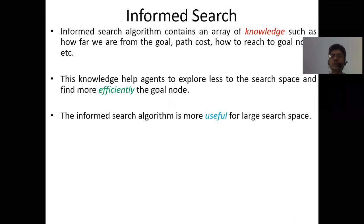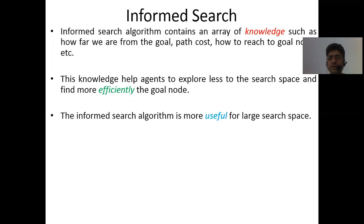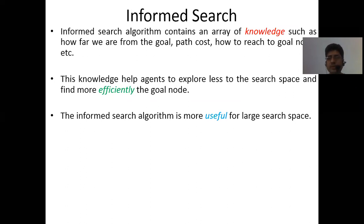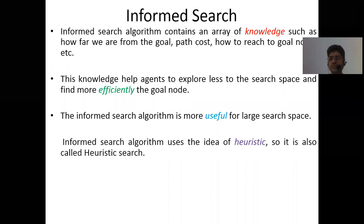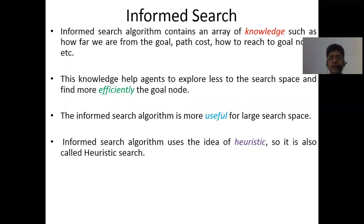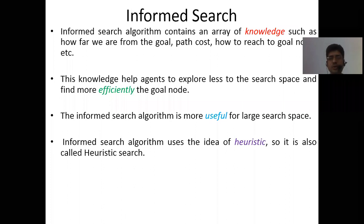The informed search algorithm is more useful for large search spaces. If you have a very large search space and want to find a needle in it without any prior knowledge, it will be very difficult. Informed search uses the idea of a heuristic, so it is also called heuristic search.